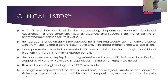After the onset of symptoms, blood parameters revealed an elevated CRP along with very low platelets. Other hematological and blood biochemistry findings were in line with his disease condition. He was promptly started on antiepileptics and antihypertensives, and an MRI brain was done. The MRI revealed features suggestive of posterior reversible encephalopathy syndrome, and we arrived at a clinical radiological diagnosis of PRES. A progressive improvement of clinical symptoms, neurological symptoms, and cognitive status was observed with treatment. His chemotherapeutic regimen was restarted one month later.